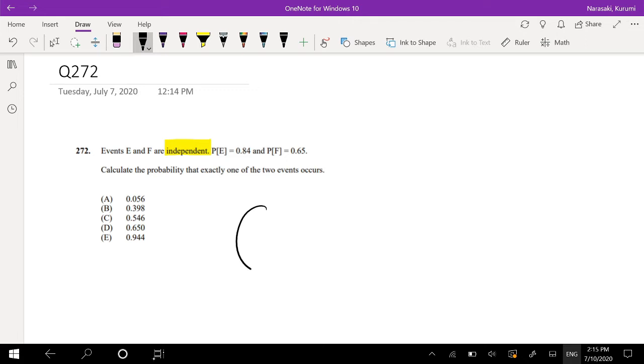Okay, so they give you that P(E) is equal to 0.84 and they give you P(F) is equal to 0.65.